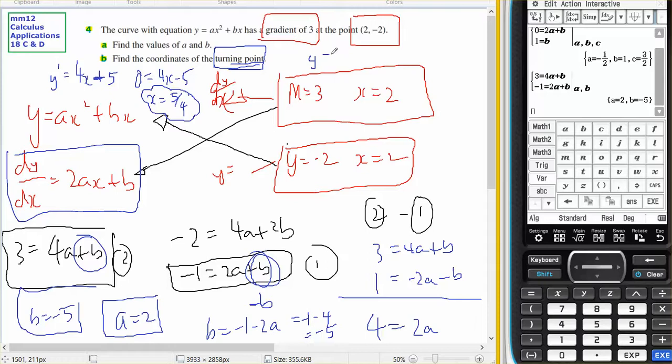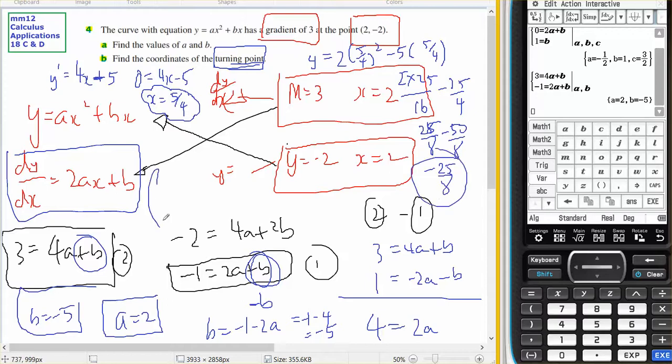And Y will equal, A is equal to 2, so 2 times 5 on 4 squared minus 5 times 5 on 4. And that's going to give me an answer of, so I've got 2 times 25 on 16 minus 25 on 4. That's 25 on 8 minus 50 on 8, minus 25 on 8. Therefore, the coordinates of the turning point will be 5 on 4, minus 25 on 8.